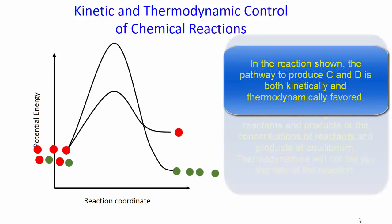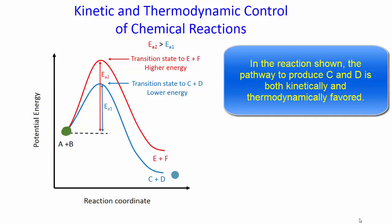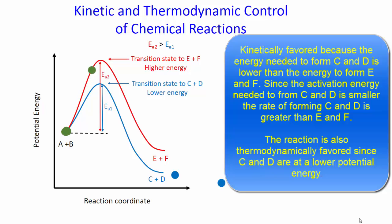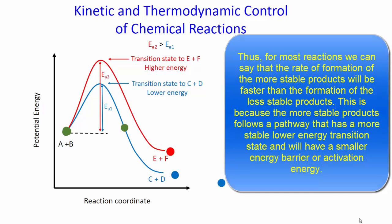In the reaction shown, the pathway to produce C and D is both kinetically and thermodynamically favored. It is kinetically favored because the energy needed to form C and D is lower than the energy to form E and F. Since the activation energy needed to form C and D is smaller, the rate of forming C and D is greater than E and F. The reaction is also thermodynamically favored since C and D are at lower potential energy. Thus, for most reactions, we can say that the rate of formation of the more stable products will be faster than the formation of the less stable products, because the more stable products follow a pathway with a more stable, lower energy transition state and a smaller energy barrier or activation energy.